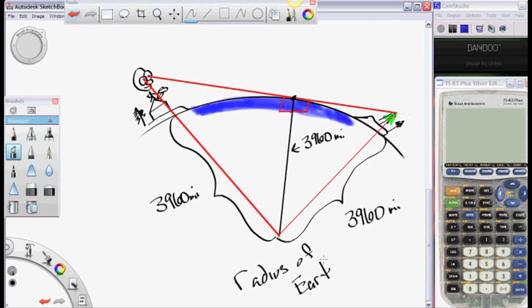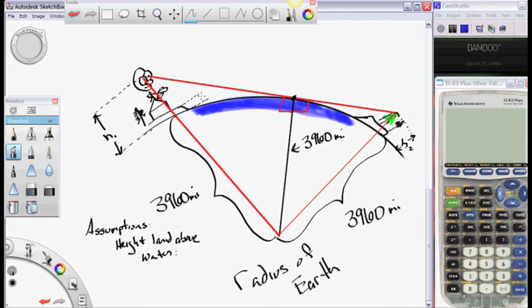Now we have to make some assumptions here. What is the height? This height we have to add to the radius of the Earth to form our hypotenuse of the right triangle. So, what is the height above the water that the house is sitting on, and the tree? Let's say 8 feet.